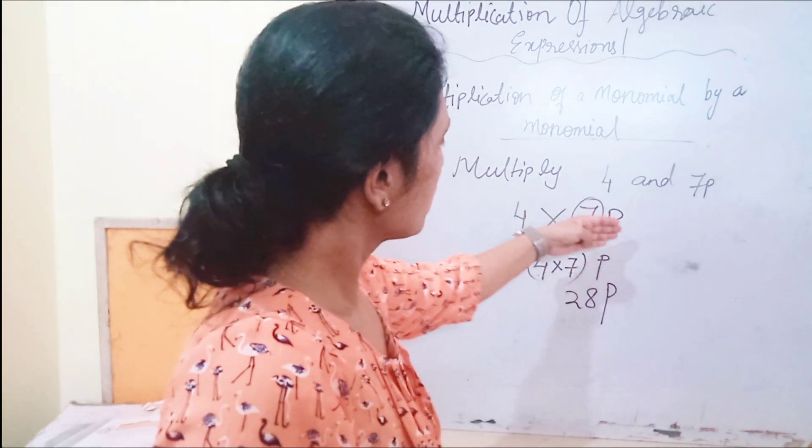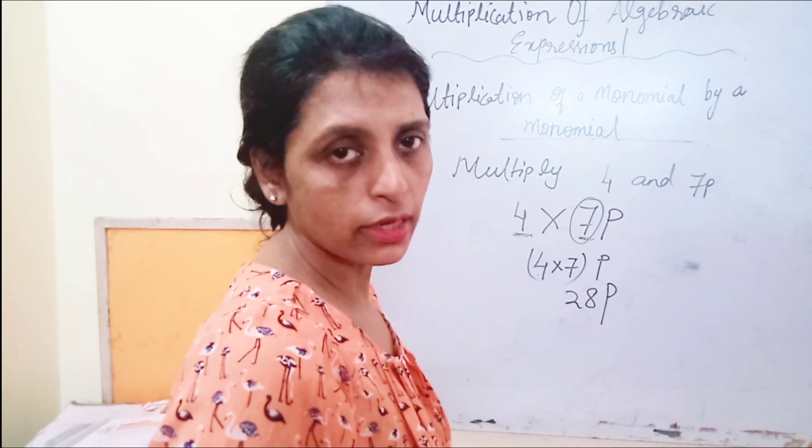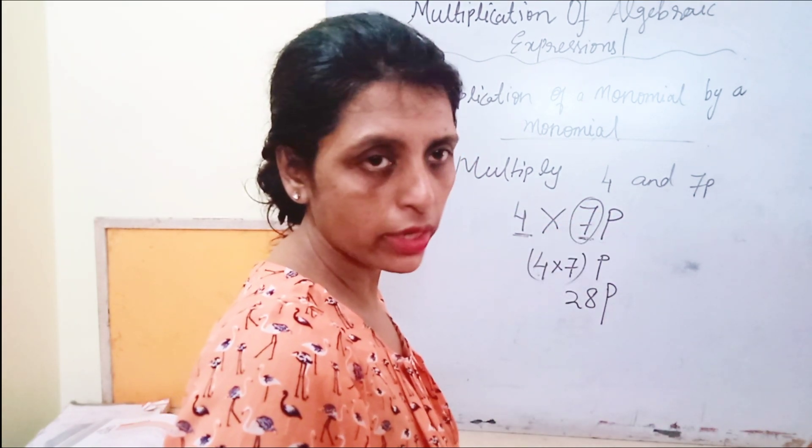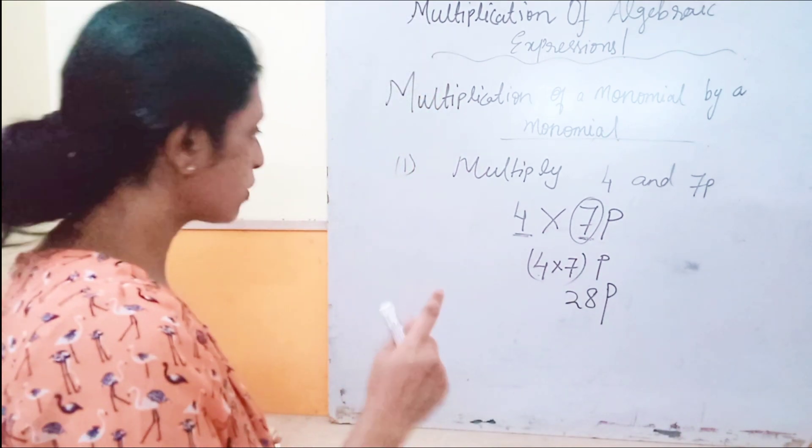The result will be 28p. I will take one more example. Here it was the multiplication of a constant with another monomial.